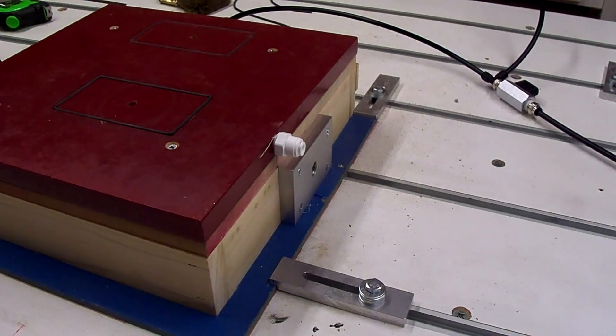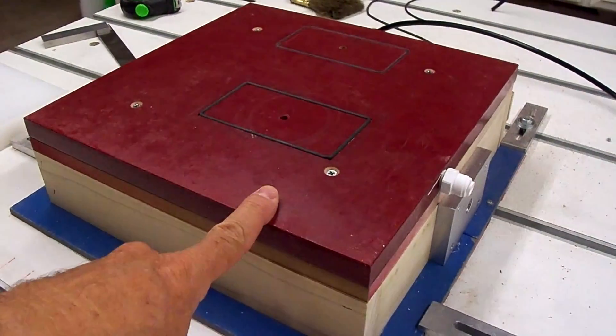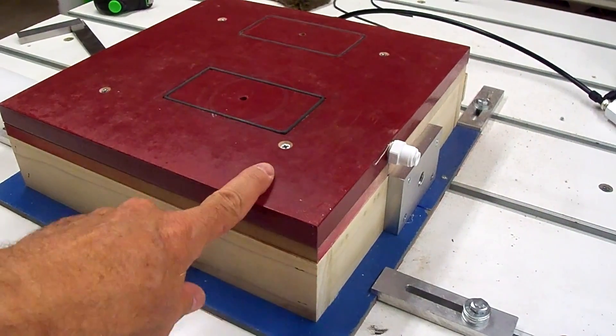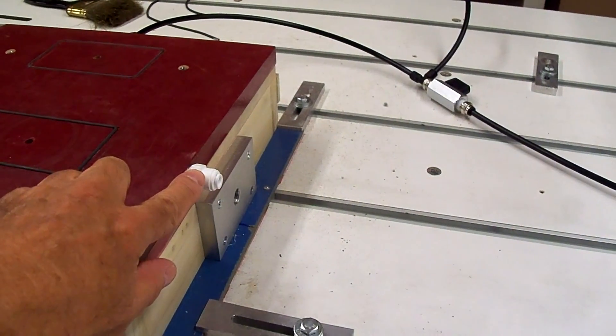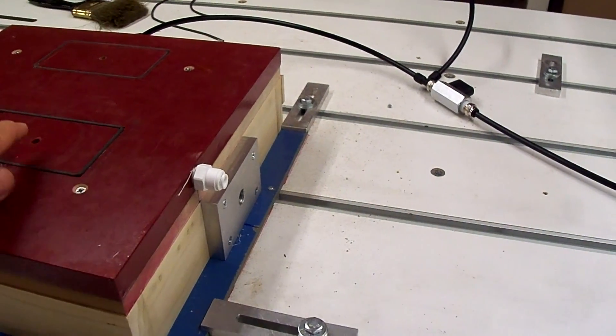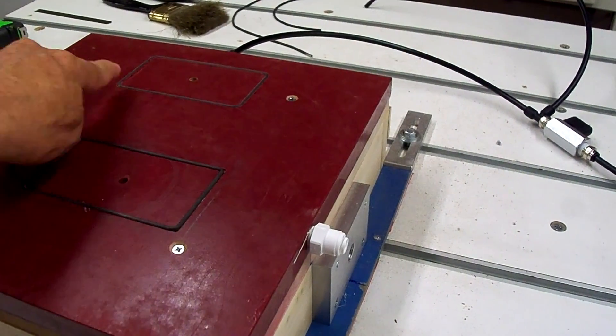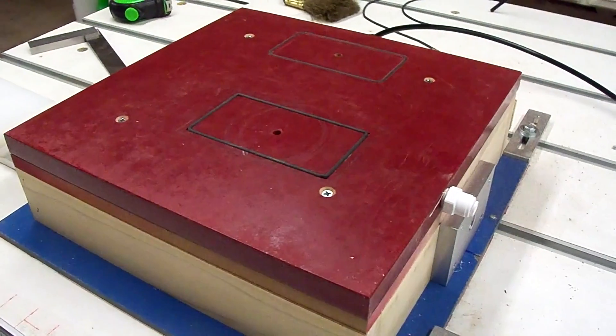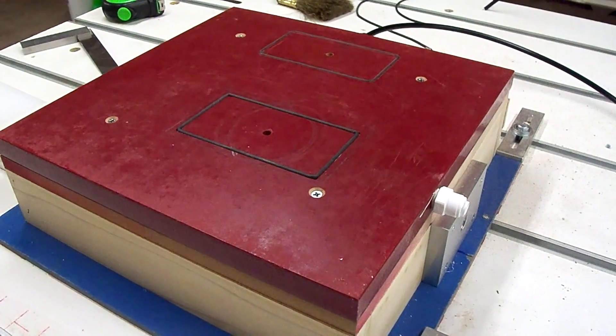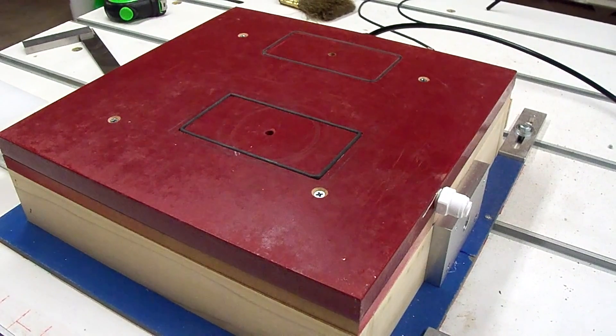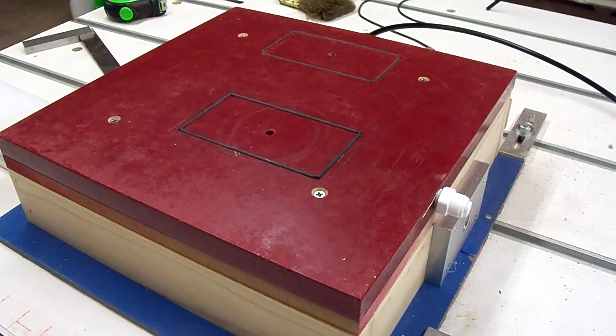In the process of waiting for that to come in, I decided to try a piece of three-quarter MDF. So that's what you see mounted to the top of the original fixture now and I've got a fitting here and a fitting on the other side with two suction ports with a gasket around each in preparation to hold down the UHMW to do the work on that.